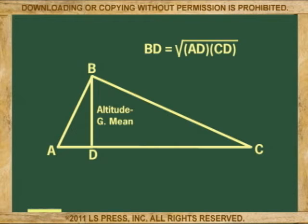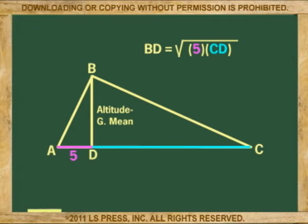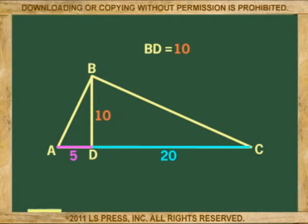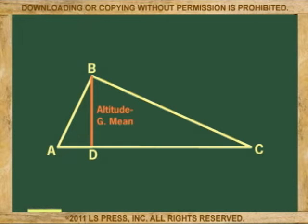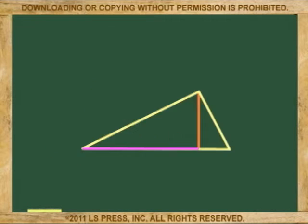Looking at it backwards, the geometric mean may also be treated as the square root of the product of the two horizontal sides of the two smaller triangles. If this horizontal side is 5 and this one is 20, their product is 100, and the square root of 100 gives an altitude of 10. Again, because the geometric mean carries the same two numbers. So knowing the size of the geometric mean and of one horizontal leg in one of the smaller right triangles is important.